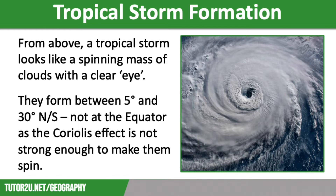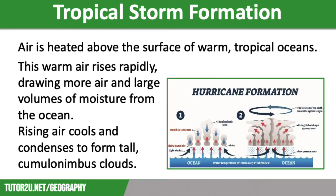The sea temperature of 27 degrees needs to be at a depth of 60 to 70 metres. This provides the heat and the moisture needed to cause the warm air to rise rapidly, creating low pressure. The air is heated above the surface of warm tropical oceans, hence the need for at least 27 degrees. This warm air rises rapidly, drawing more air and large volumes of moisture from the ocean, causing strong winds. The rising air will cool and condense to form tall cumulonimbus clouds. This releases latent heat, which is energy released without a change in temperature, and this latent heat powers the tropical storm.